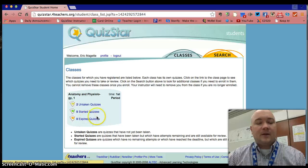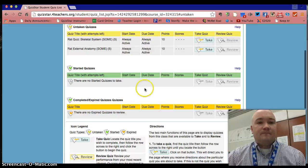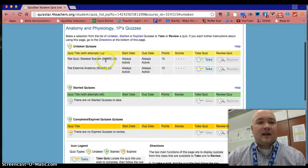I'm going to be able to look at my quizzes that I've already taken, quizzes that I've started and still need to finish, and quizzes that I've started and finished and maybe need to review the answers. You'll see in this case I have both the rat skeletal system and external anatomy quizzes that I can then take from this screen.